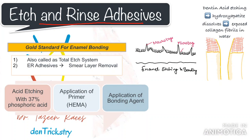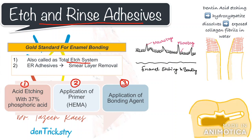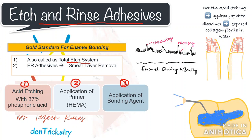First, we shall discuss the etch and rinse adhesive systems, also called total etch systems. The total etch adhesive systems were introduced in the early 1900s. Initially, it involved essentially 3 steps. The first step was acid etching, the second step was application of primer, and the third step involved application of the adhesive resin or the bonding agent. In the first step, 37% phosphoric acid is applied to the enamel and dentine tissue simultaneously — that is why it is called a total etch technique. It is kept for 15 to 30 seconds and then the acid is rinsed away from the tooth surface, removing the smear layer and smear plugs on the enamel and dentine.